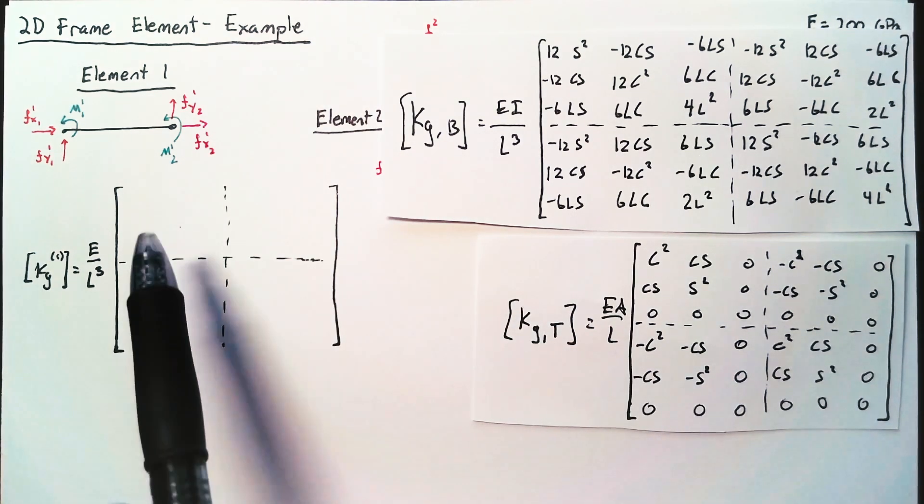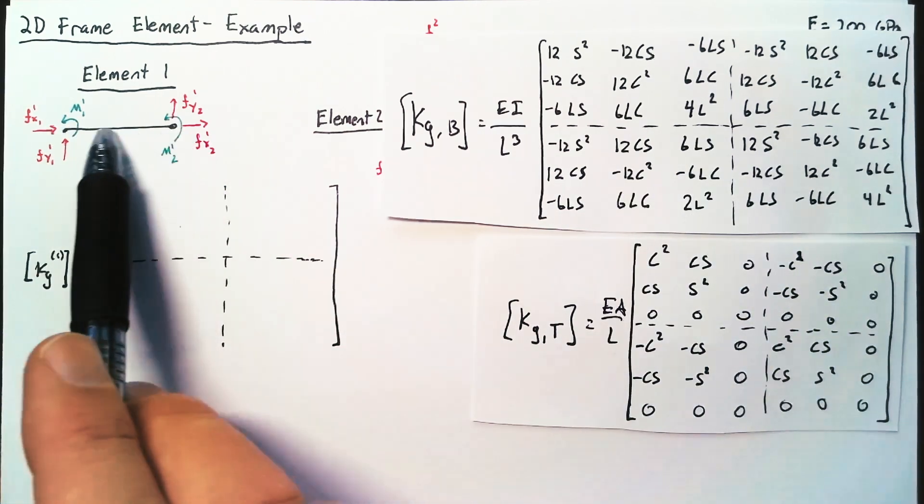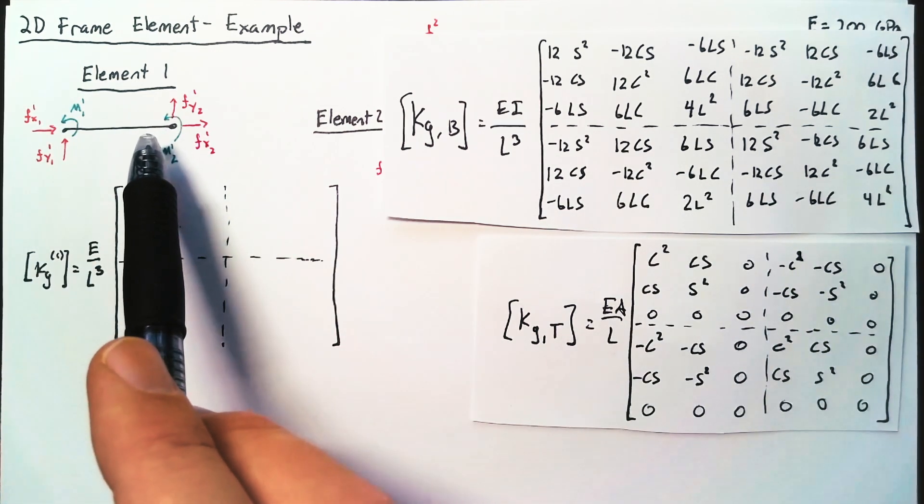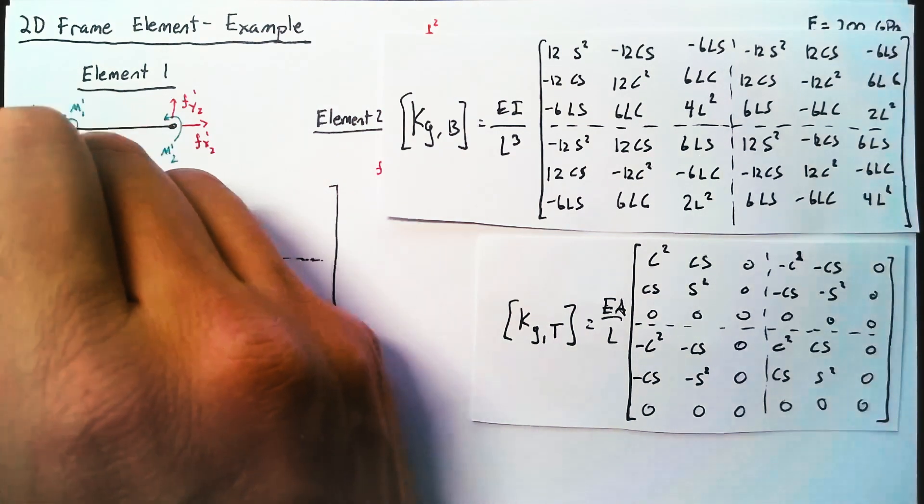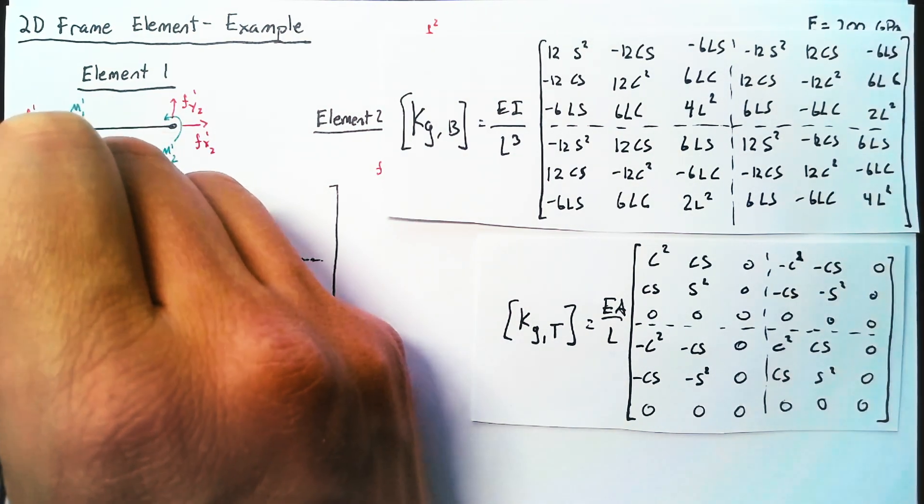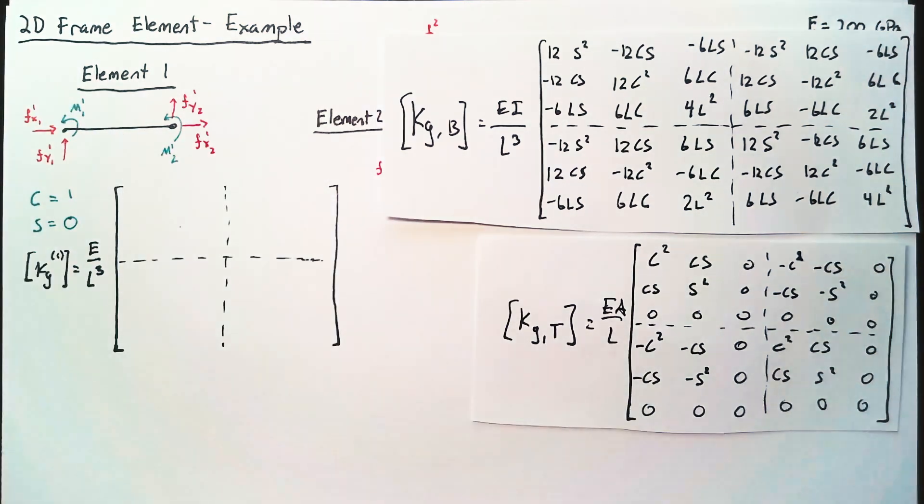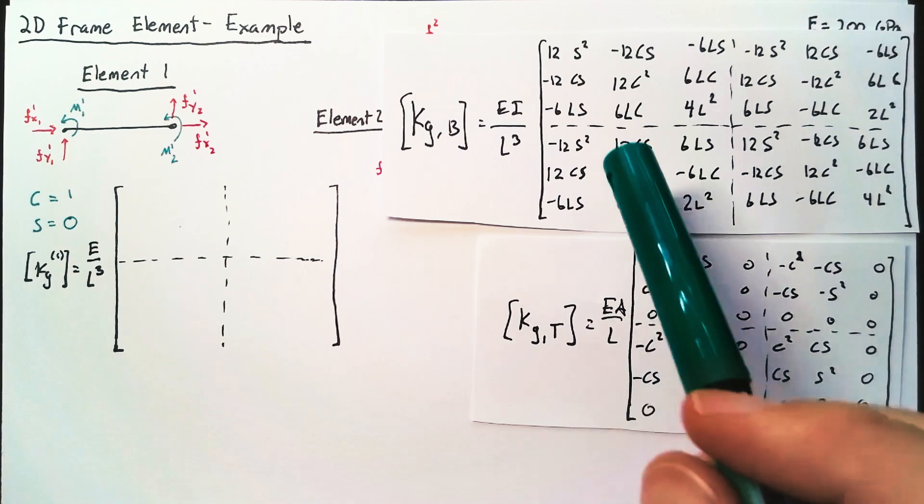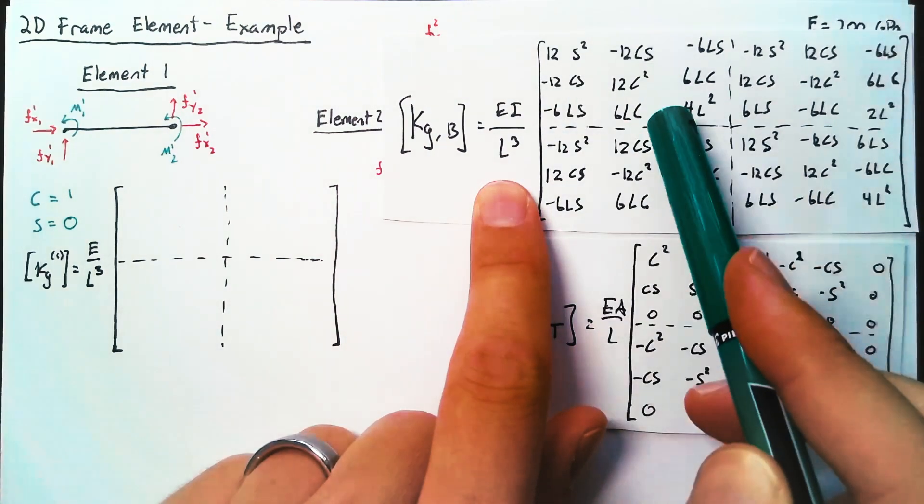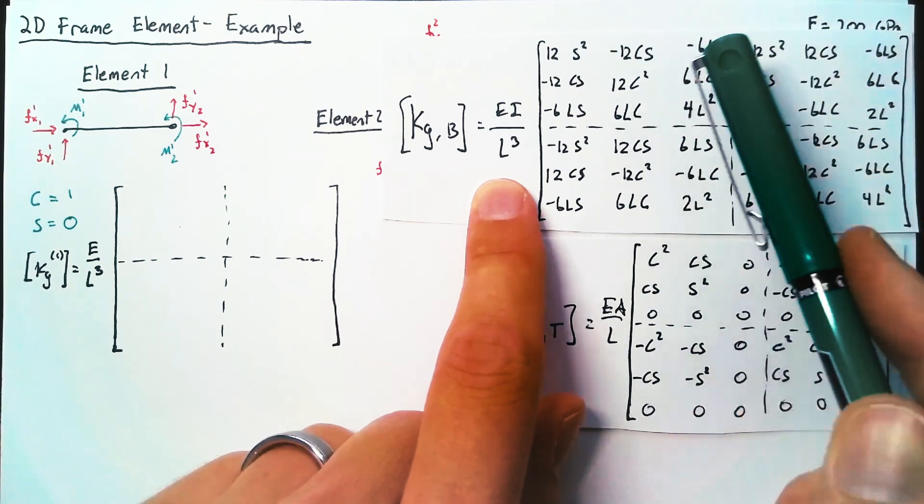Now looking at this element, we are perfectly horizontal, which means that theta is equal to zero degrees. What that means for us is cosine theta, or C, is equal to one, and sine theta, or S, is going to be equal to zero. So everywhere on our base matrix that we see an S, we can just set the entire thing equal to zero, and then C's will just be equal to one.